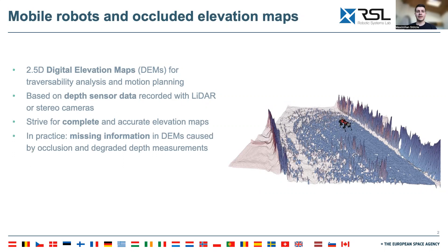In practice, however, our robots often encounter occlusions caused by terrain discontinuities such as rocks, obstacles, or convex terrain, which hide an area patch from the sensor's viewpoint. Further, depth measurements can be degraded due to reflection, stereo matching failures, dust, or textureless surfaces, which frequently lead to additional missing elevation information in the DEM.